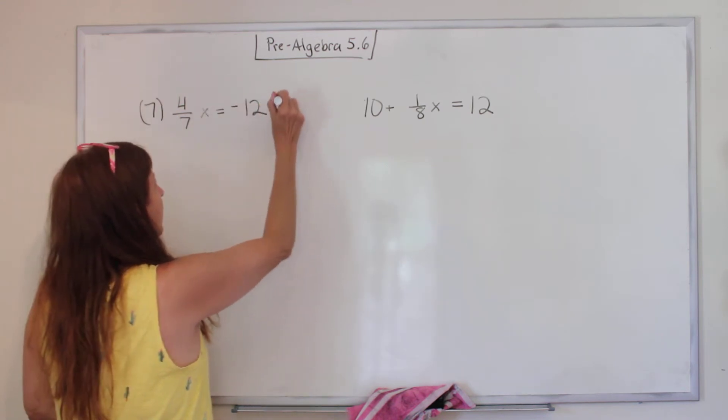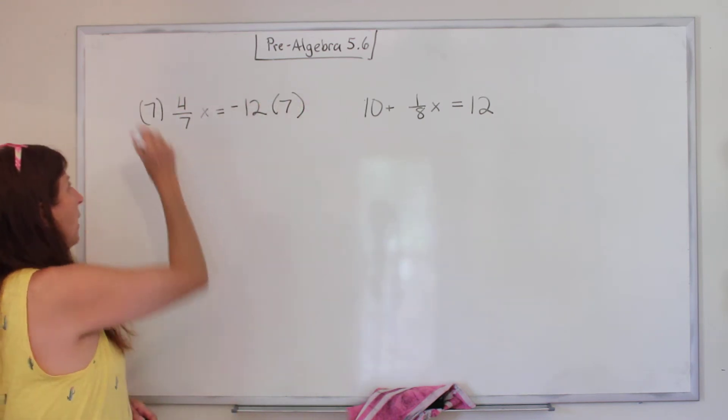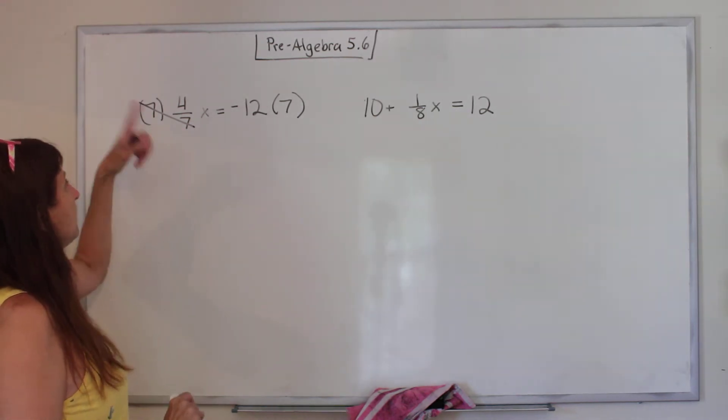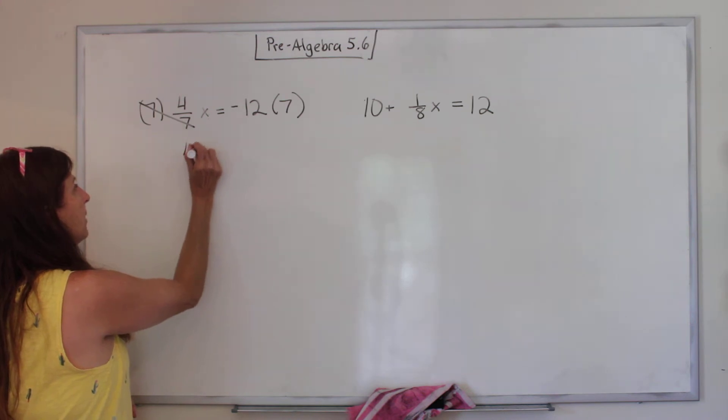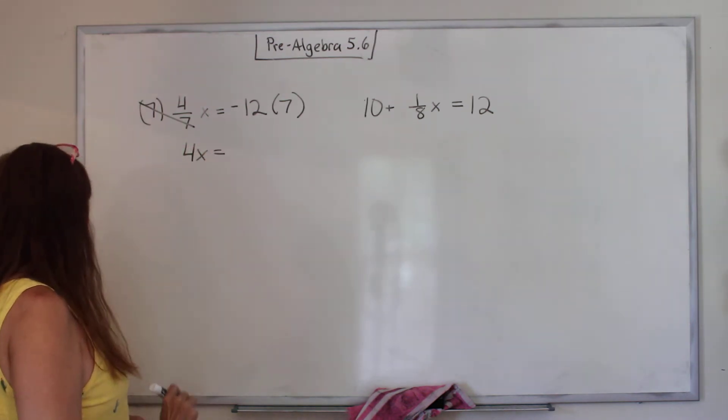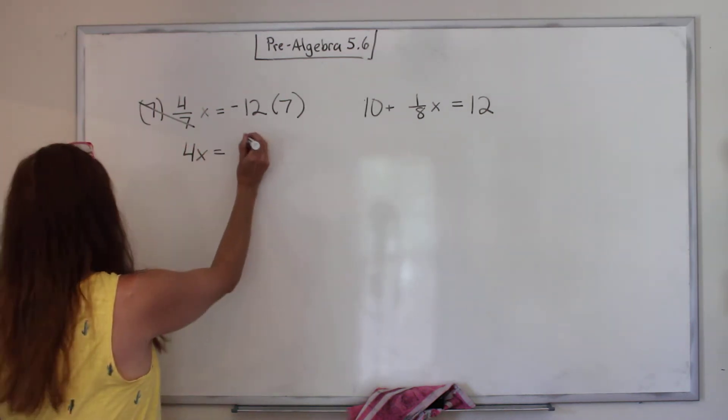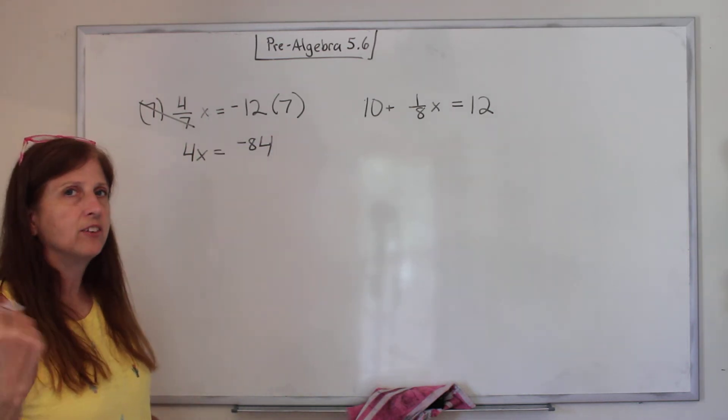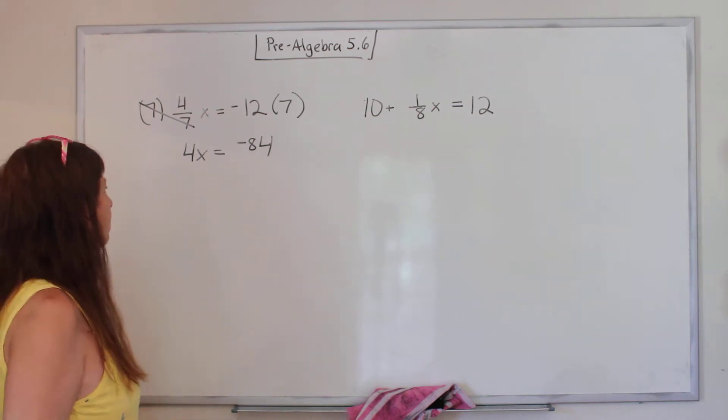And what you do to one side, you do to the other. What happens to these? They cancel out. So this x is being divided by 7, so we multiply by 7. So we bring down what we didn't mess with. And negative 12 times 7 is negative 84. And if you don't know your 12 tables that high, just do it on your calculator.